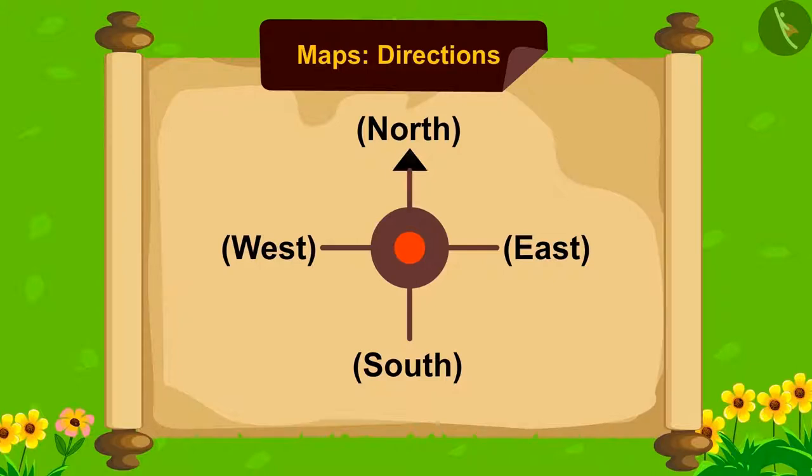There is an arrow like this on it. The head of it always points towards the North. An end towards the South. Towards the left of North is West. And towards the right is the East direction.